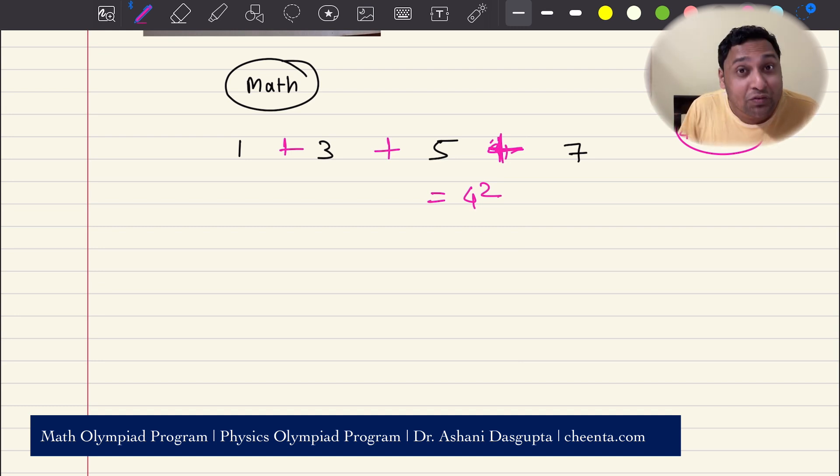But how do you prove it? There are multiple ways. You can do it geometrically, which is what we do in the Math Olympiad program. We can also do it using the Gauss trick. This is challenge 1: Give me a proof of the fact that sum of n consecutive odd numbers is n square.